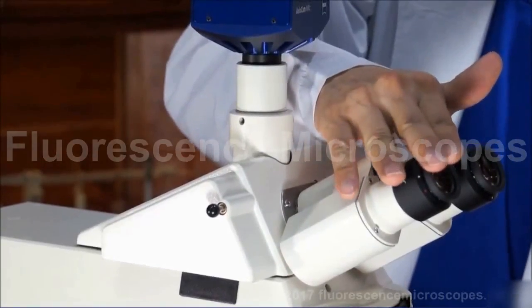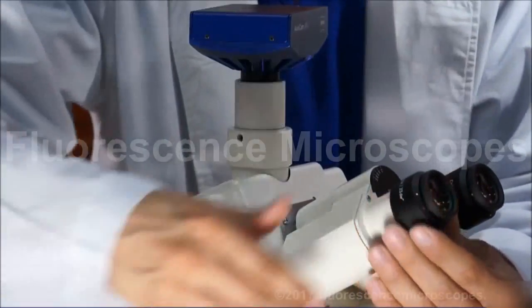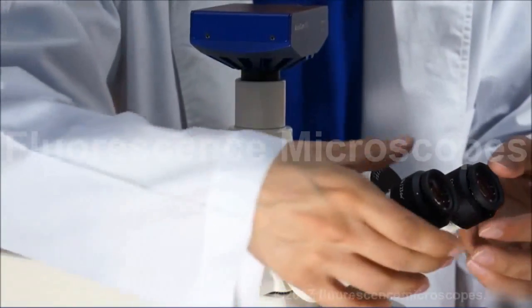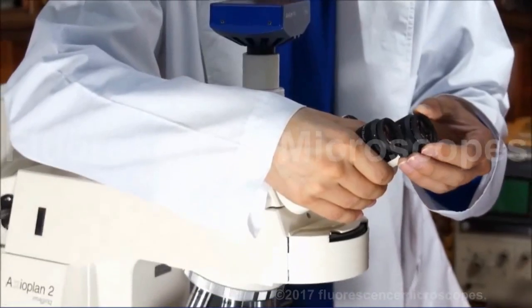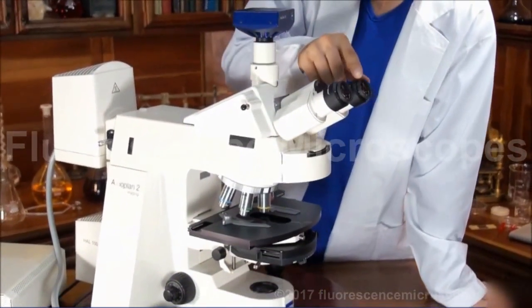You're going to want to look in one, focus the microscope, then look into your other eye, leave the focusing alone, and adjust this diopter just a little bit until the other eye is in focus.